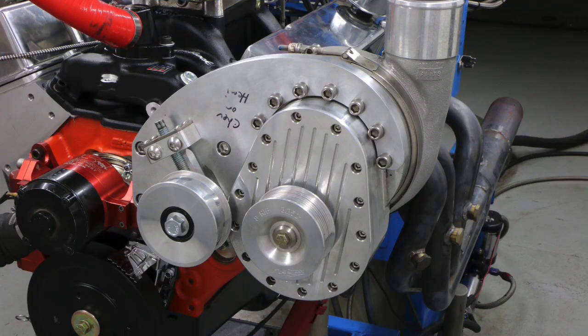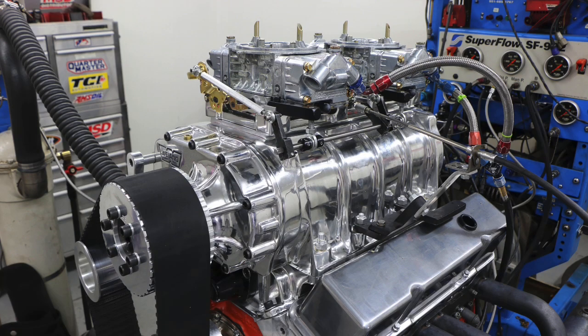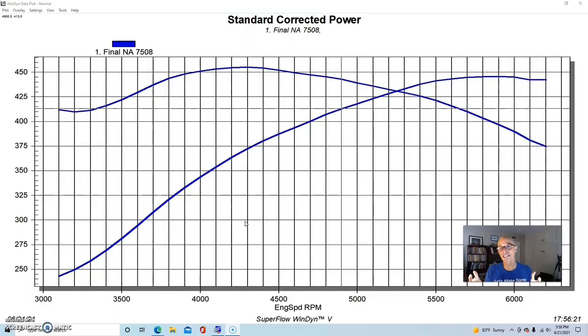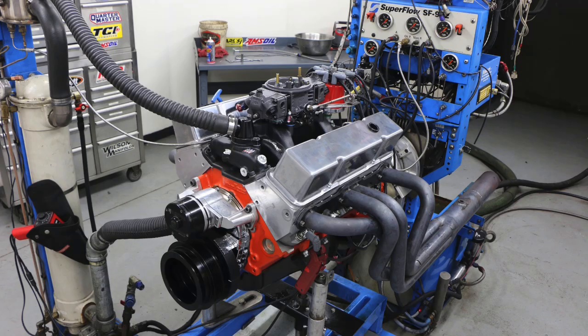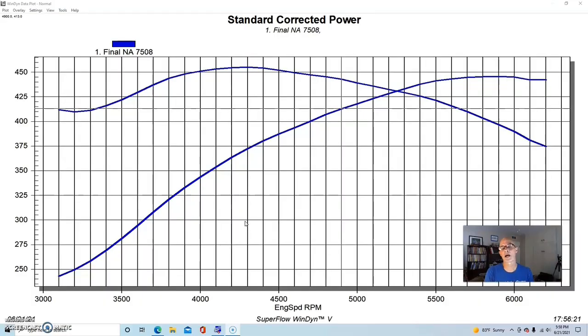To illustrate the difference between the Torque Storm centrifugal supercharger and the 671 root supercharger on a small block Chevy, we obviously needed a small block Chevy test motor. So we chose a Power Adder crate motor, a 383 stroker Power Adder crate motor from the guys at Blueprint Engines.